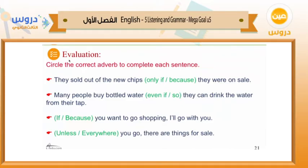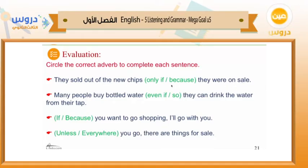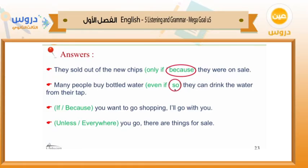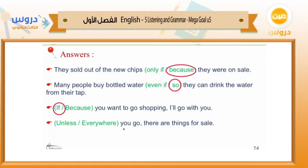Let's move to the evaluation. Circle the correct adverb to complete each sentence. Number one: 'They sold out of the new chips _____ they weren't on sale' — the answer is 'because.' Number two: 'Many people buy bottled water _____ so they can drink the water from their tap' — the answer is 'so.' Number three: 'If you want to go shopping, I'll go with you' — 'if.' Number four: '_____ you go, there are things for sale' — answer is 'everywhere,' giving information about place.